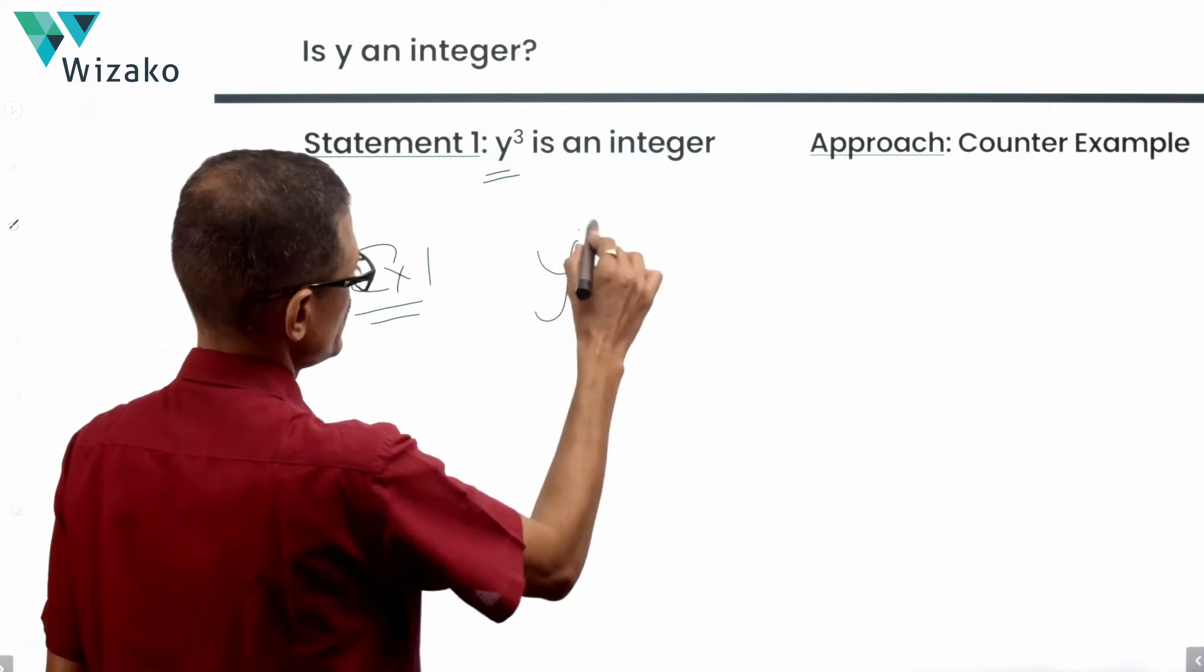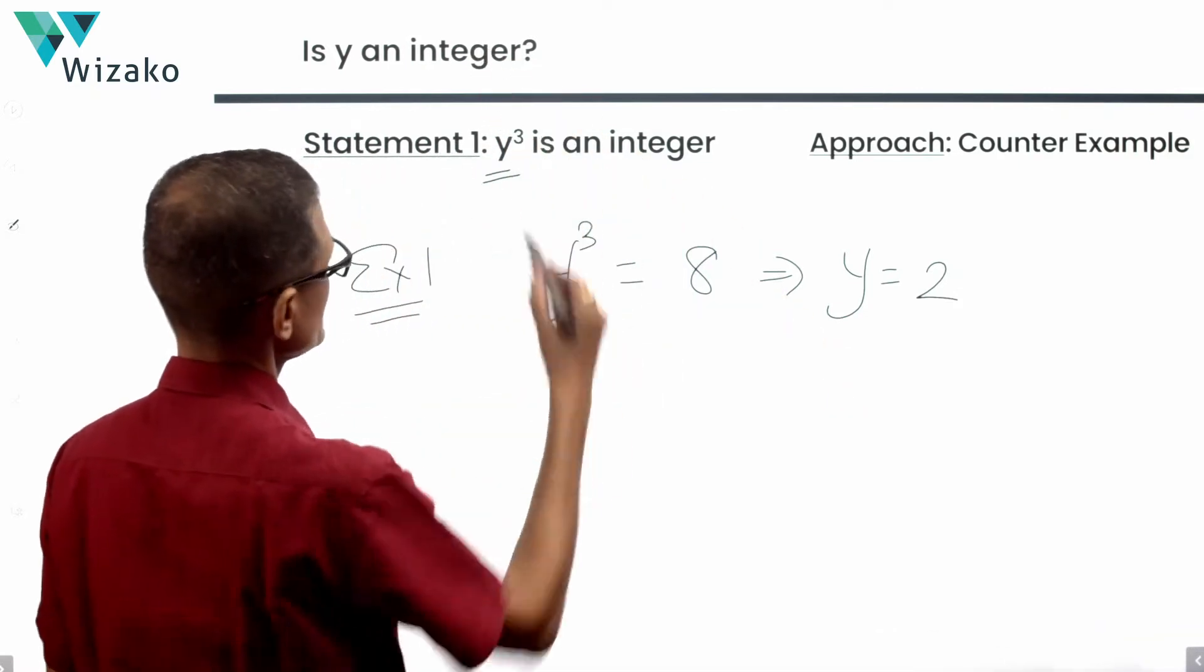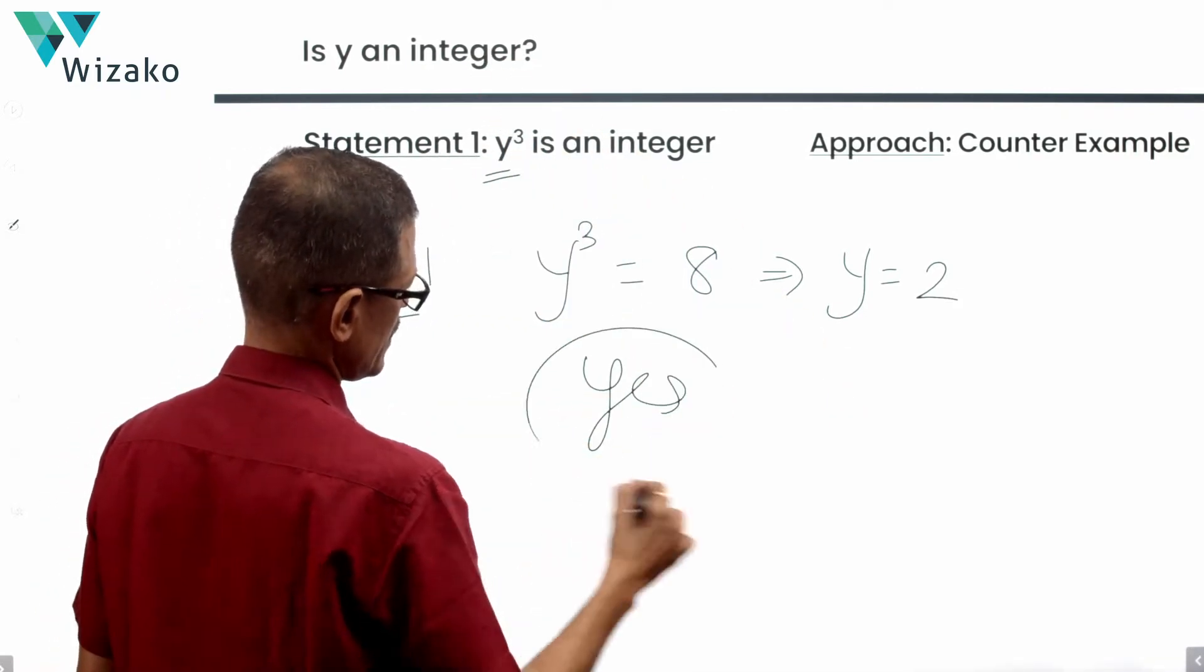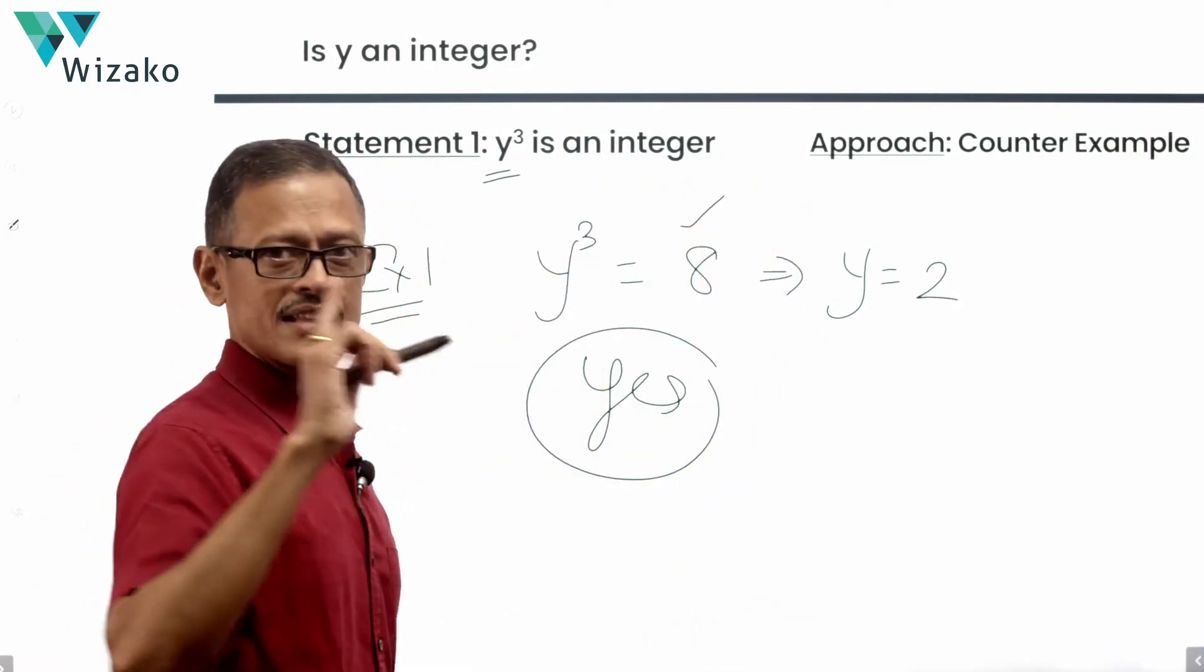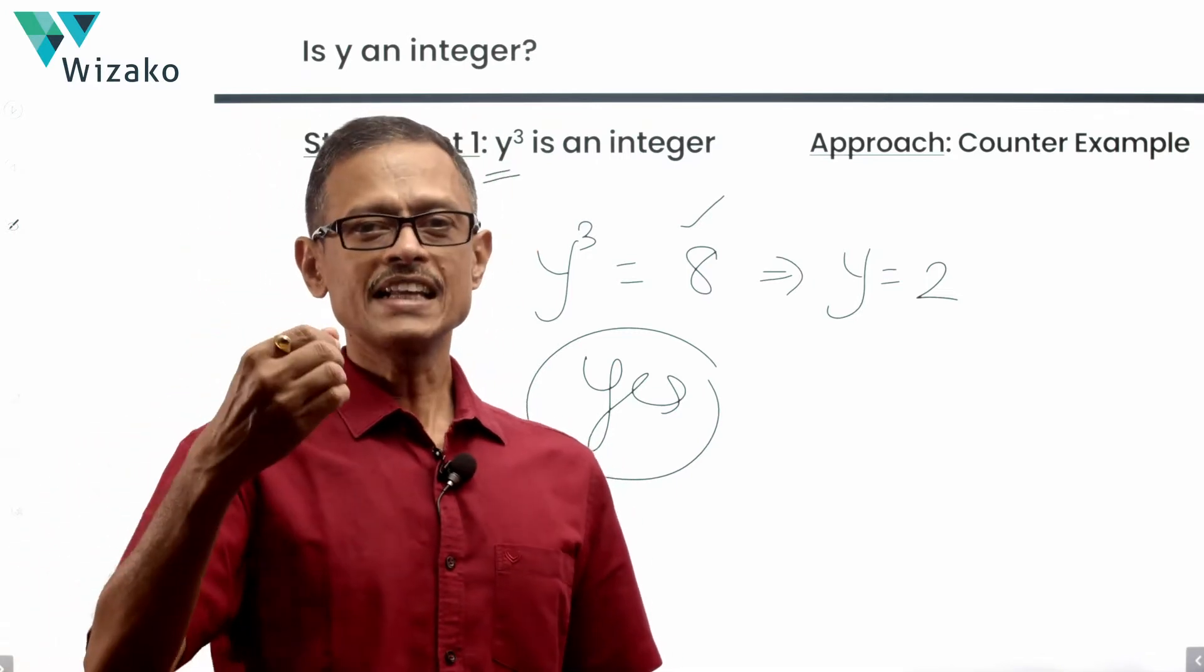If y cube is equal to 8, then that translates to y is equal to 2. Is it an integer? The answer is yes. Is y cube an integer? Yes. As mandated by statement 1, we have taken y cube to be an integer. Did we get an answer as yes? Yes.